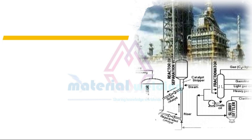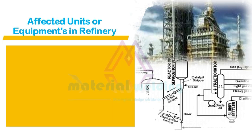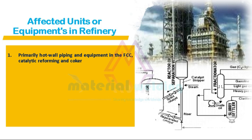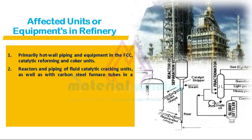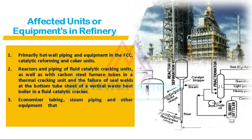The next section covers affected units or equipment in refineries with this damage mechanism. These include hot wall piping and equipment in FCC, catalytic reforming, and coker units. Also reactors and piping of fluid catalytic cracking units, carbon steel furnace tubes in thermal cracking units, and seal wells at the bottom tube seat of vertical waste heat boilers in fluid catalytic crackers. Additionally, economizer tubing, steam piping, and other equipment operating in the temperature range of 850 to 1025 degrees Fahrenheit are more likely to suffer graphitization.